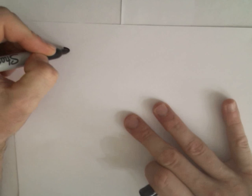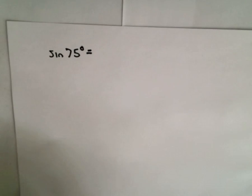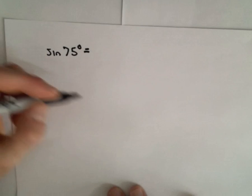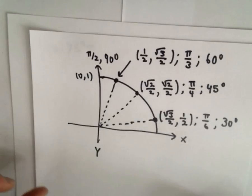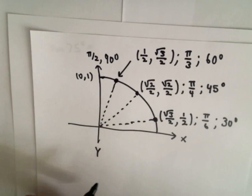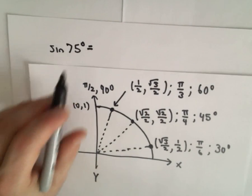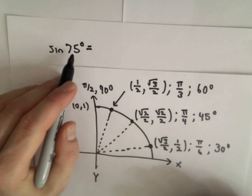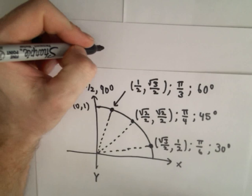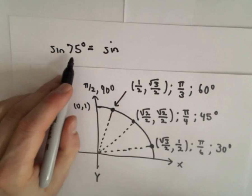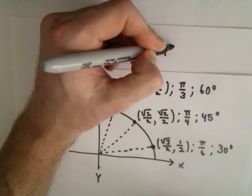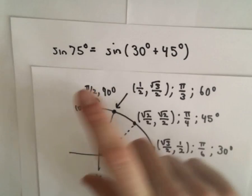So we're going to figure out sine of 75 degrees to start with. I want to use the sum identity. I know sine of 30 degrees, 45 degrees, 60 degrees, 90 degrees and multiples of all those, but I don't know sine of 75 degrees right off the top of my head. I want to write 75 degrees as a sum of values I am familiar with. I can write sine of 75 degrees as sine of 30 degrees plus 45 degrees — 30 and 45 gives you 75.